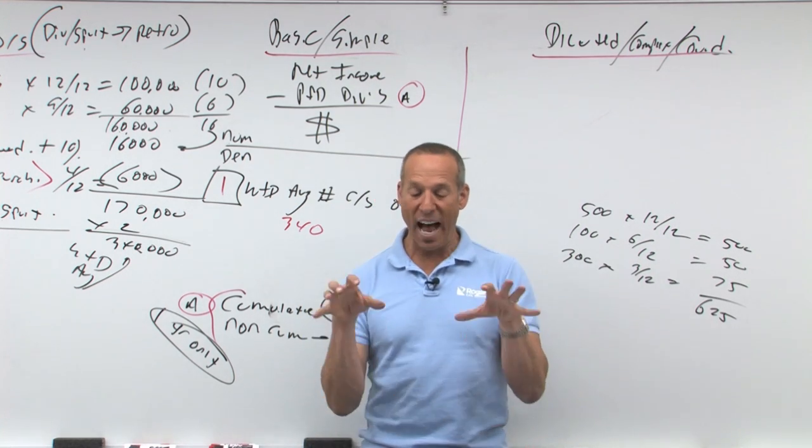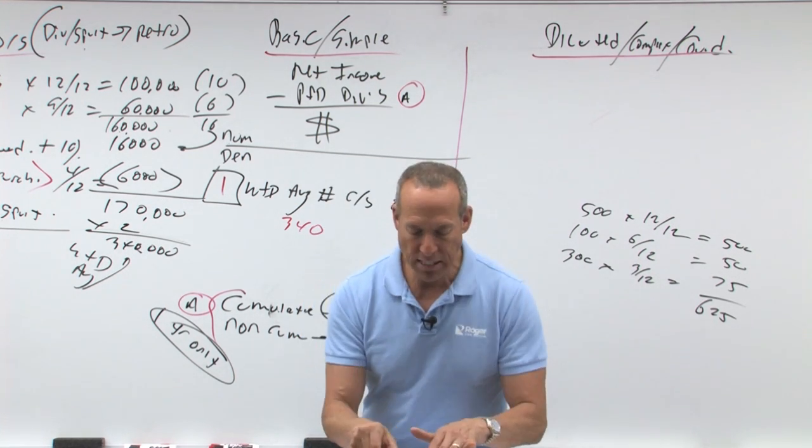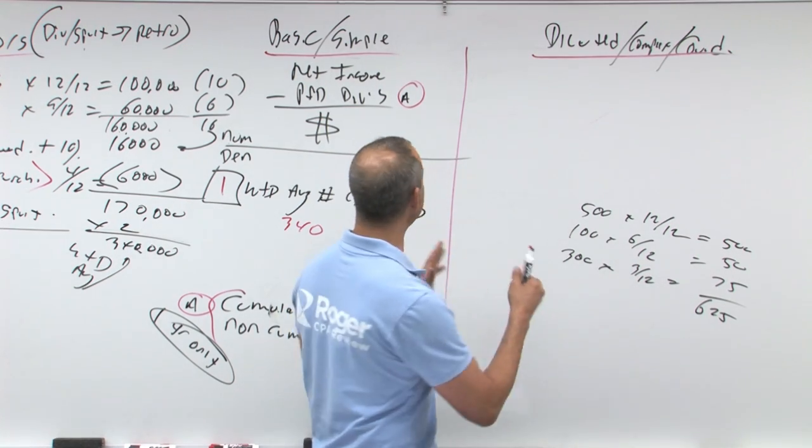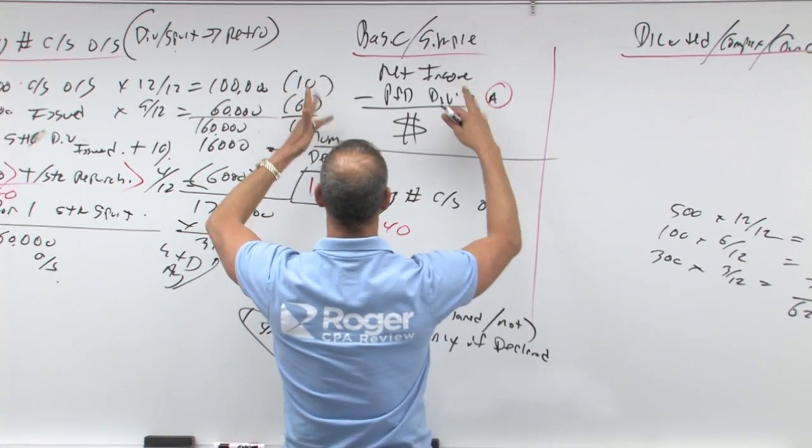Okay, now let's talk about what we call diluted earnings per share. This is diluted because it's a complex capital structure. Remember over here we had basic. Basic said assume there's nothing potentially diluted.